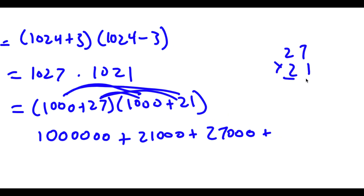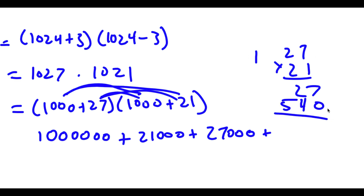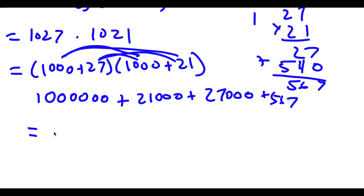And 27 times 21 — let's do that right here. 7 times 1 is 7, 1 times 2 is 2, 2 times 7 is 14, and 2 times 2 is 4, plus 1 is 5. So 27 times 21 is 567. So now this is going to be equal to 1,021,000 plus 27,000 is 1,048,000, plus 567 is 1,048,567.